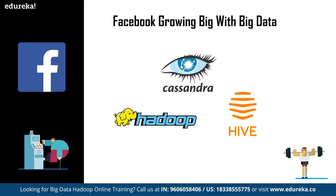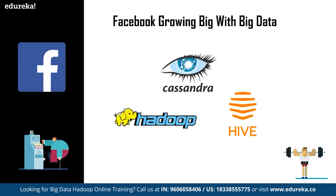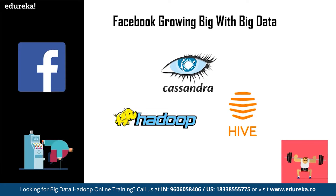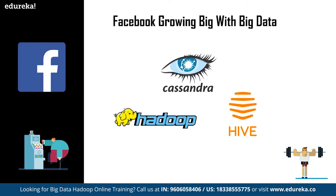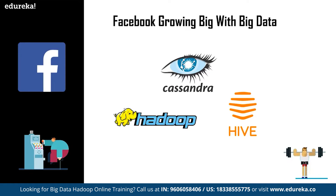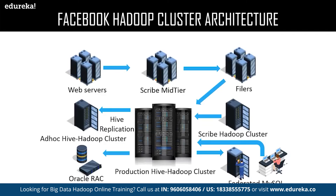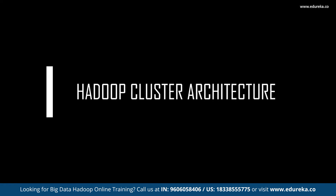The next update is Hive. After Yahoo implemented Hadoop for its search engine, Facebook thought about empowering data scientists to store larger amounts of data in the Oracle data warehouse, and hence Hive came into existence. This tool improved the query capability of Hadoop using a subset of SQL and soon gained popularity in the world of unstructured data. Today, thousands of jobs are run using the system. This is the overview of Facebook's Hadoop cluster, which consists of web services, ad-hoc Hive Hadoop cluster, production Hive Hadoop cluster, and many more.